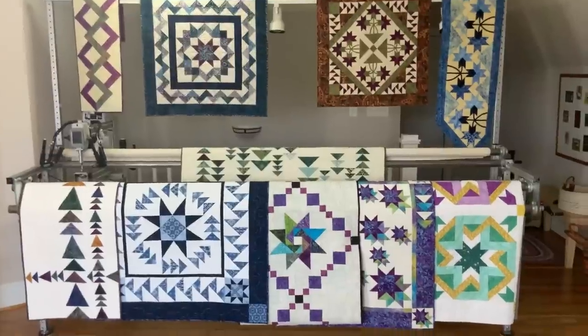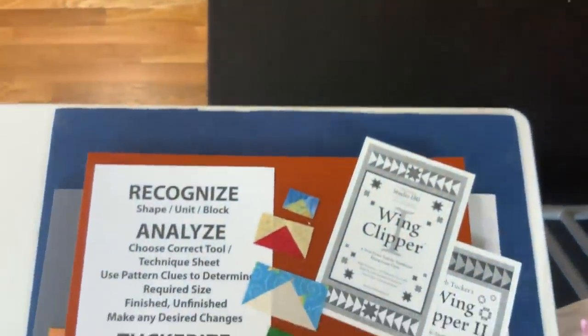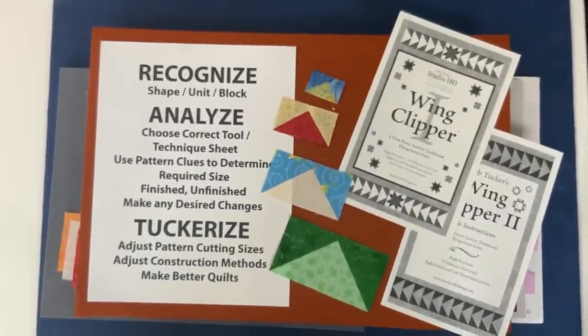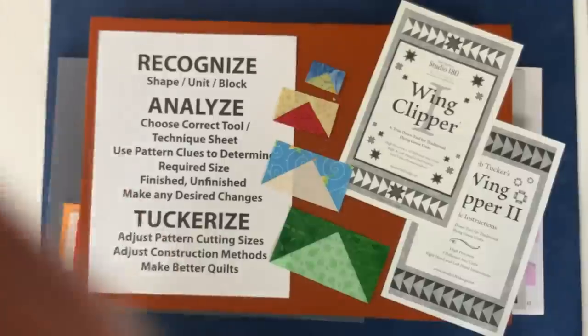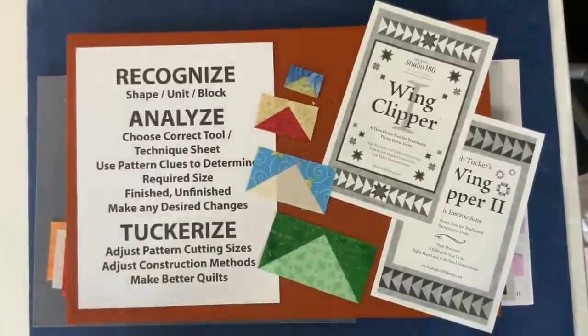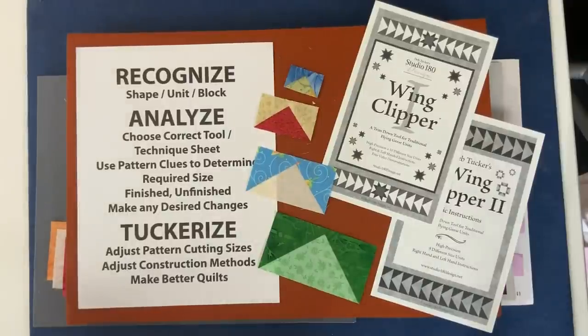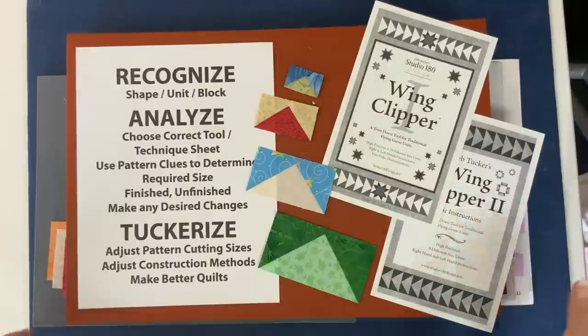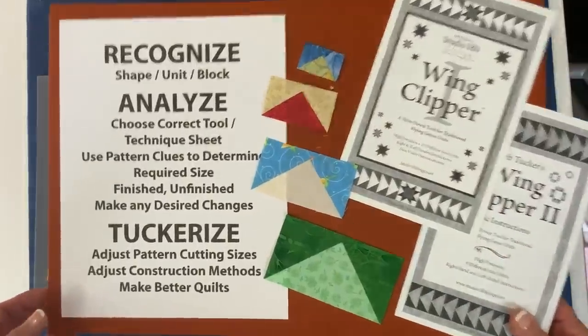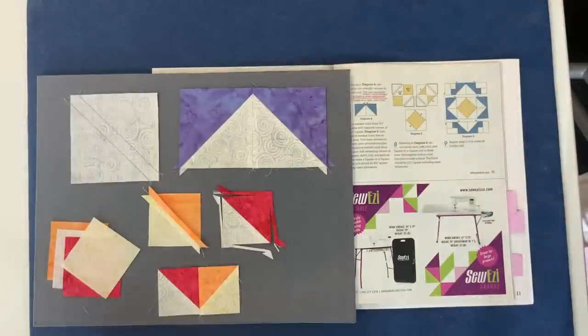Remember that if you would like to Tuckerize something, there are three steps to the process. First, you have to recognize the unit. Then you want to analyze what you're being told, and then make the changes to your cutting before you begin your project. So we're working with flying geese. The tool that I've designed to work with that is called the Wing Clipper. But let's take a look at how different pattern writers are telling you to build different flying geese units.